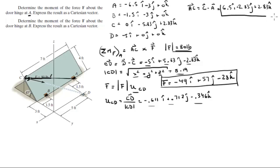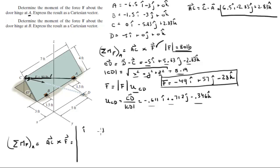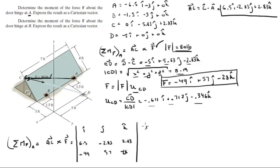Now we have the two vectors needed for the cross product to find the moment about A. The moment F creates about A is the cross product of AC and the Cartesian vector form of F. We draw the matrix with i, j, k on top. For AC: 6.5, negative 2.83, and 2.83. For F: negative 49, 57, and negative 28. We redraw the first and second columns: 6.5, negative 2.83, negative 49, 57.